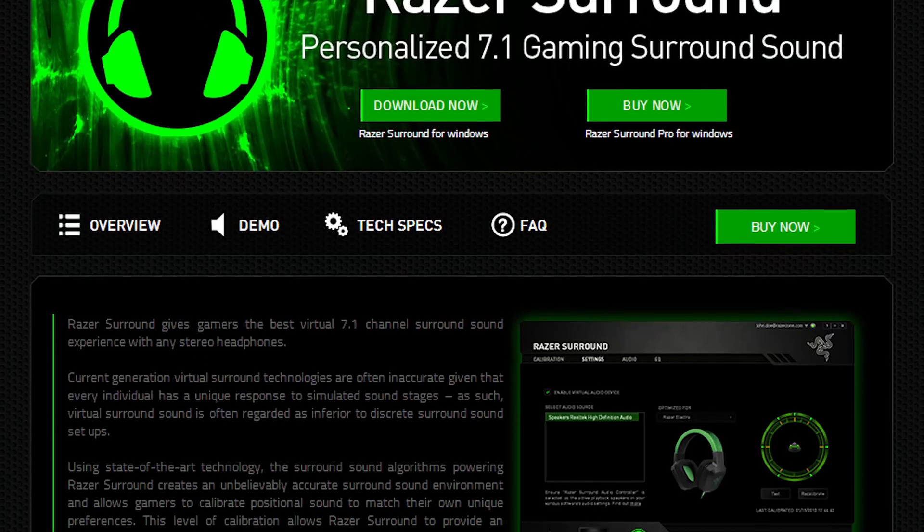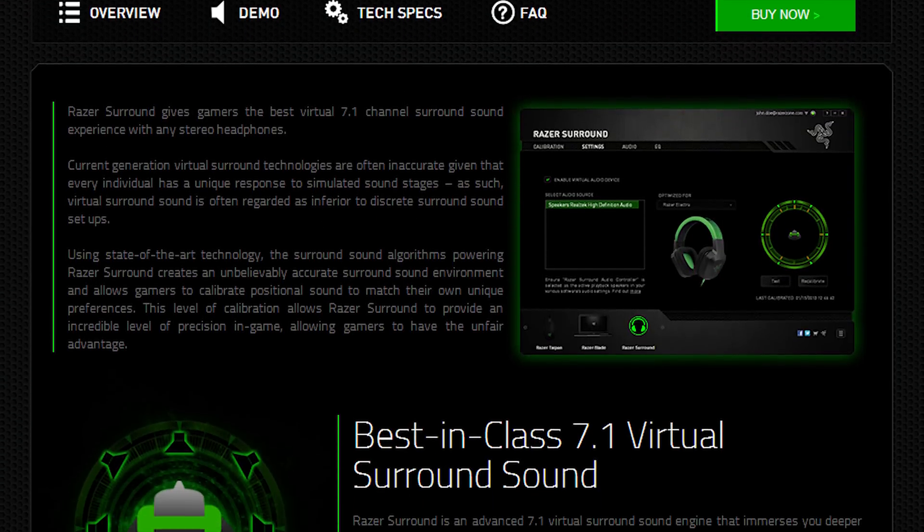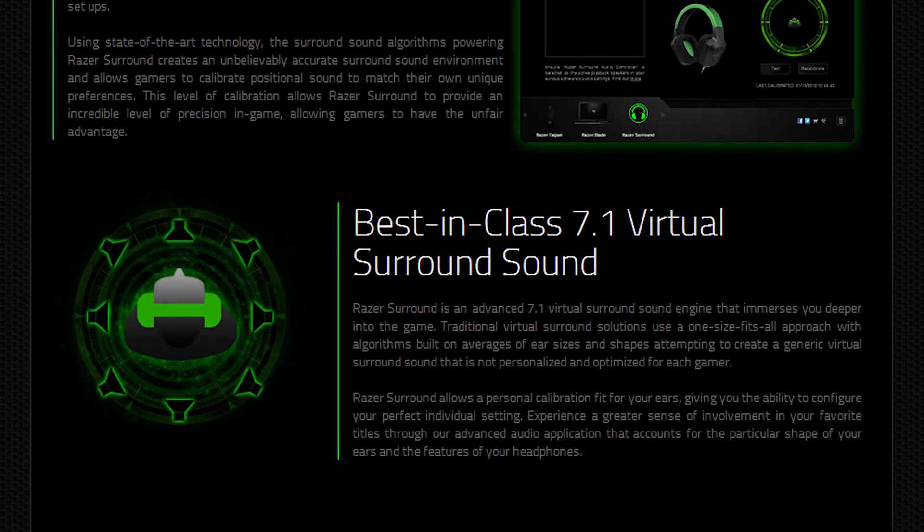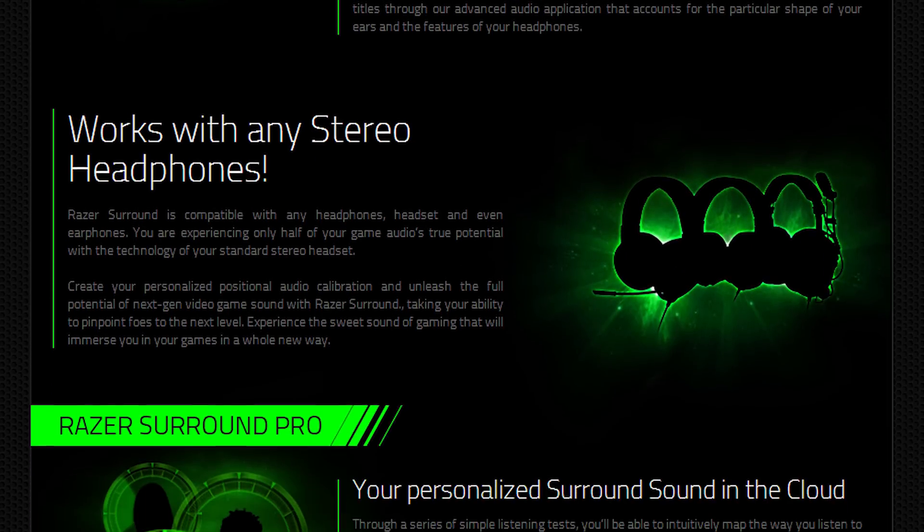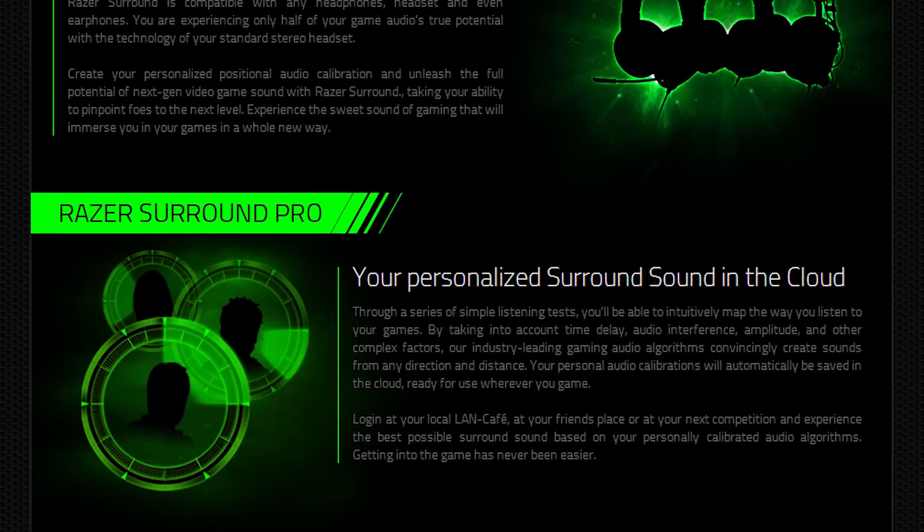Virtual surround headphones do something similar by using the shape of your ears to project sound from different angles. Many of these have a general one-size-fits-all setting based on average ear sizes, but options like Razer Surround are quite customizable, so you can tweak the placement of each virtual speaker to perfect your listening experience. To give an example of what good virtual surround should sound like through headphones, check out this video, which uses binaural sound recording to simulate surround sound.